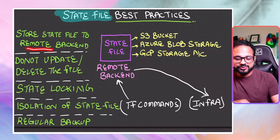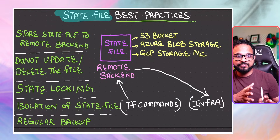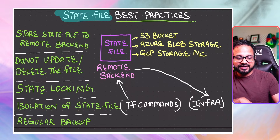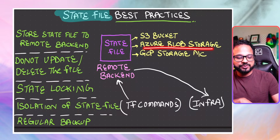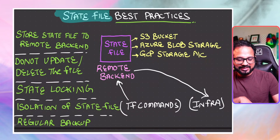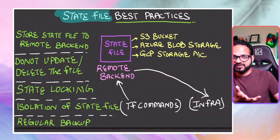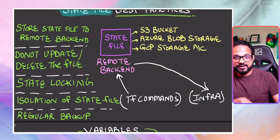The best practice is to use a remote backend. Remote backend means a storage location which is remotely accessed from Terraform as if it were a local file. These remote backends could be an S3 bucket if you are using AWS, Azure Blob Storage if you are using Azure, or GCP Storage if you are using GCP. You store your state file to a remote backend and access it locally. You run the Terraform commands, it accesses the file from remote, runs it as local, and then makes changes to your infrastructure.